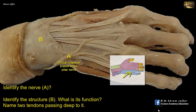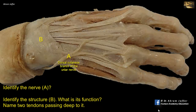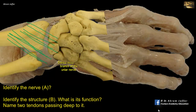B is a thickening of the deep fascia of the forearm that lies obliquely across the extensor surface of the wrist joint. Proximally it is attached to the radius; distally it is attached to the pisiform and triquetral bones on the medial side of the carpal bones, so it lies obliquely. This thickening of the deep fascia is the extensor retinaculum.